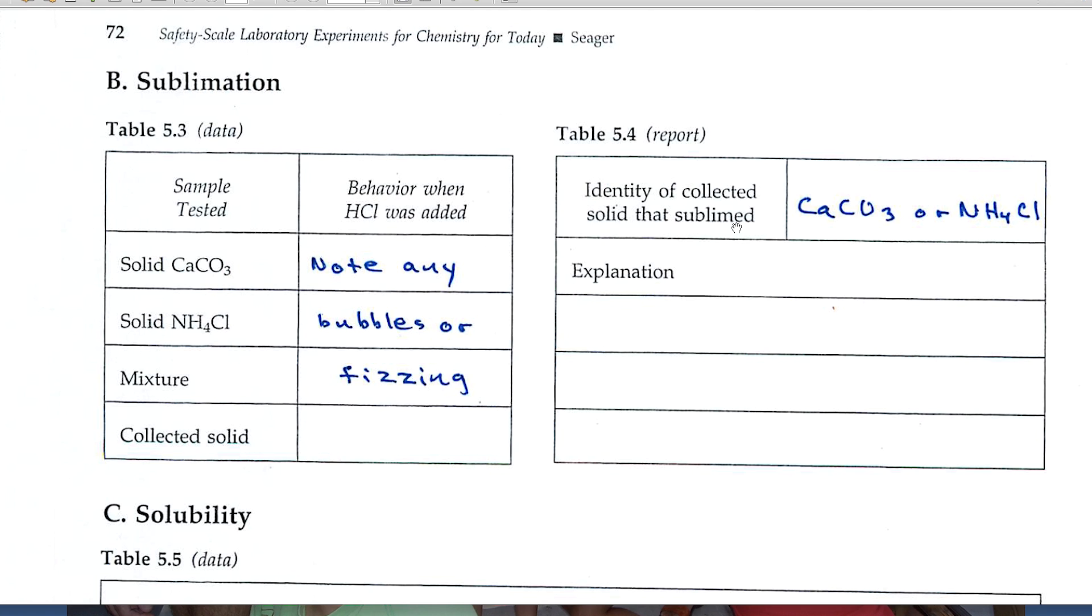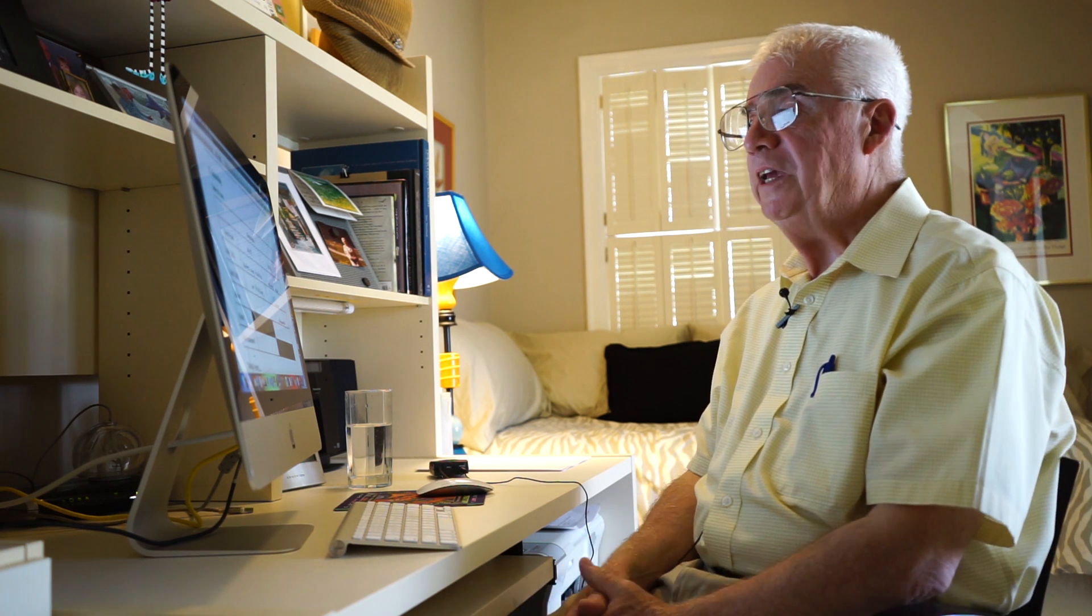And that's what you'll be, the conclusion that you'll be drawing over here on the right-hand side. The identity of the collected solid that's sublimed. Right here you'll put calcium carbonate or ammonium chloride. It's one of the two, not both. And the explanation simply is that the collected solid gave identical behavior when HCl was added to it.